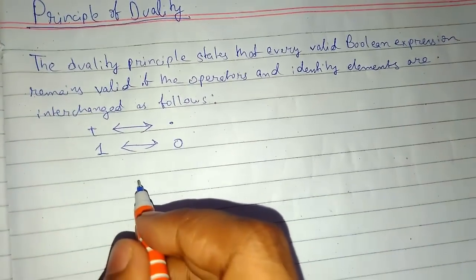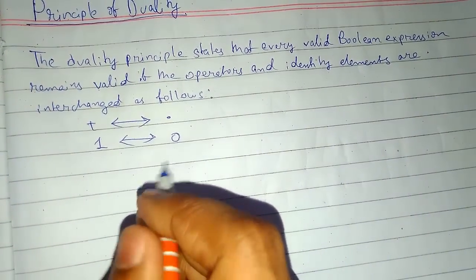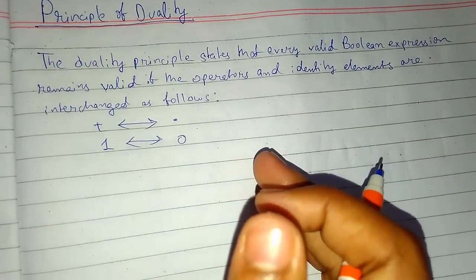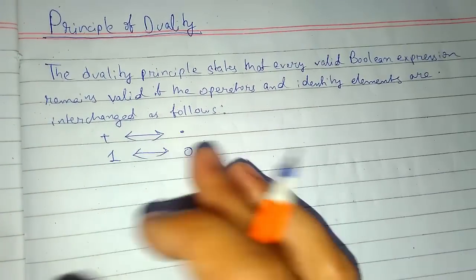Therefore, the duality of a Boolean expression is found by replacing AND with OR, OR with AND, zero with one, and one with zero.